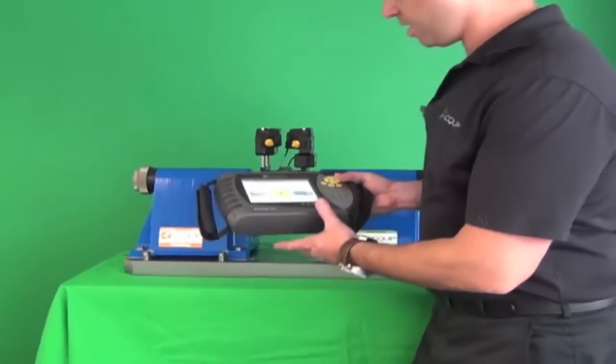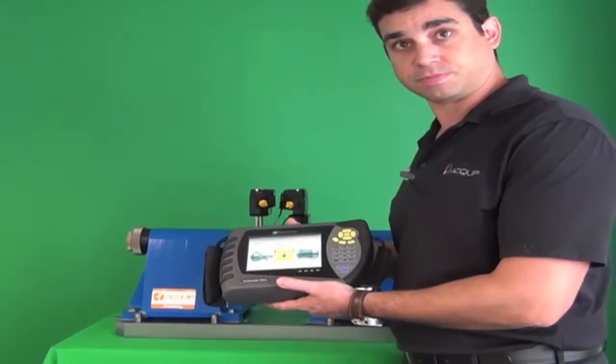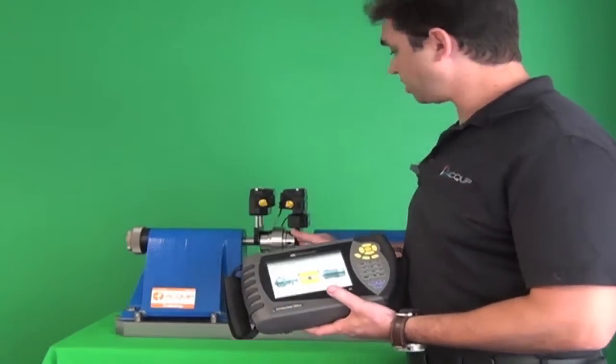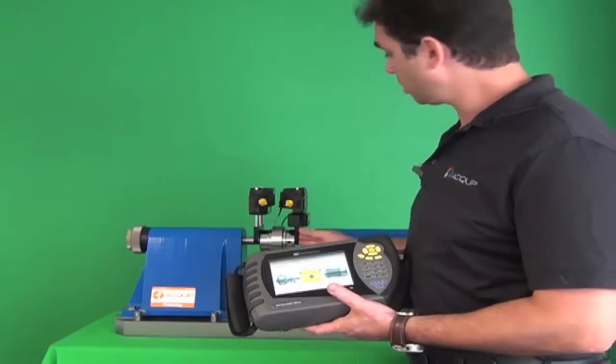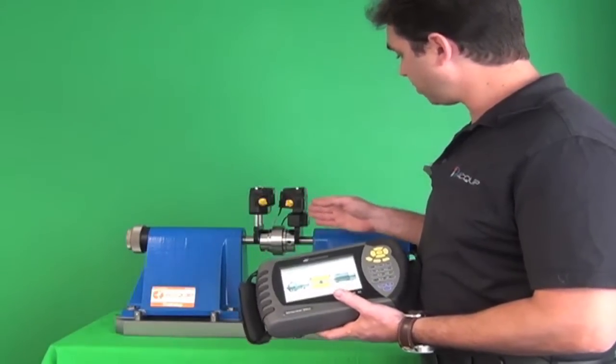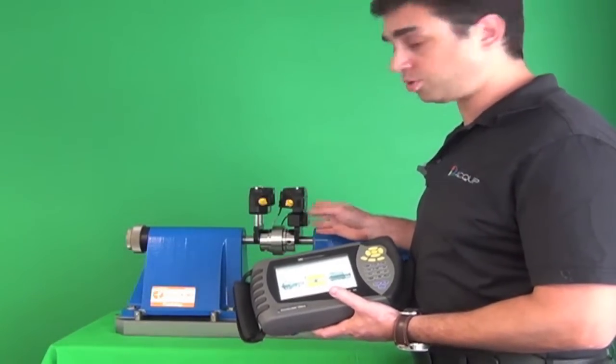So what we have here is a Rotoline Ultra computer, along with some mag brackets that are available, a laser, a receiver, and our Bluetooth module that allows the whole operation to be wireless.